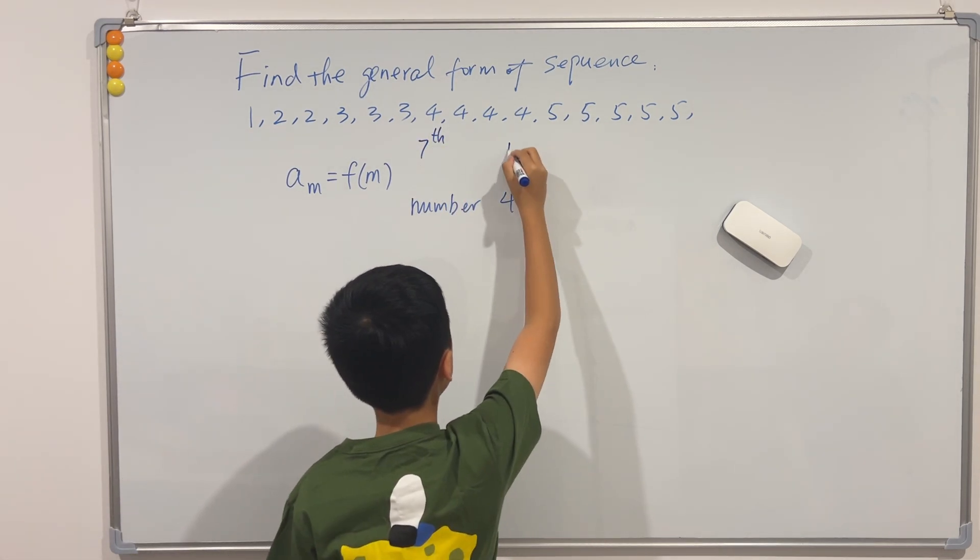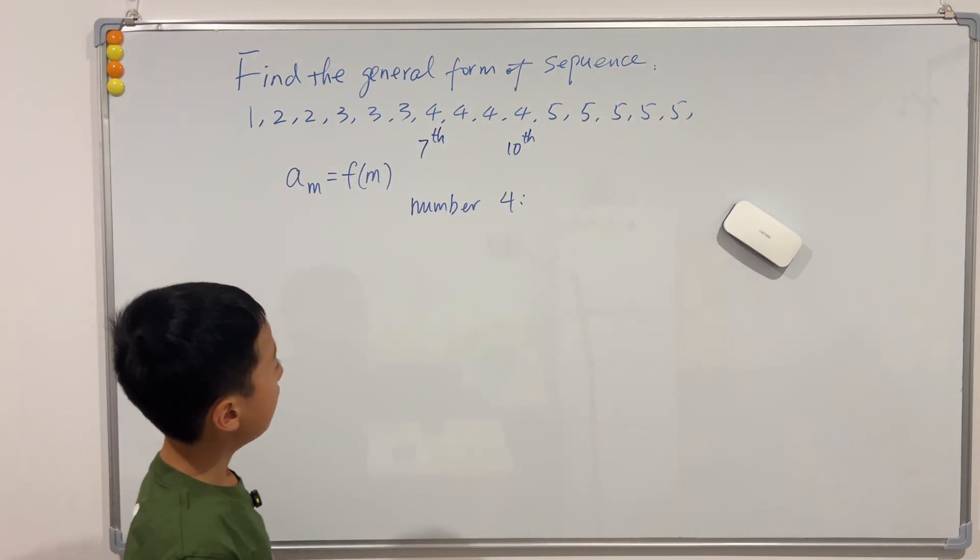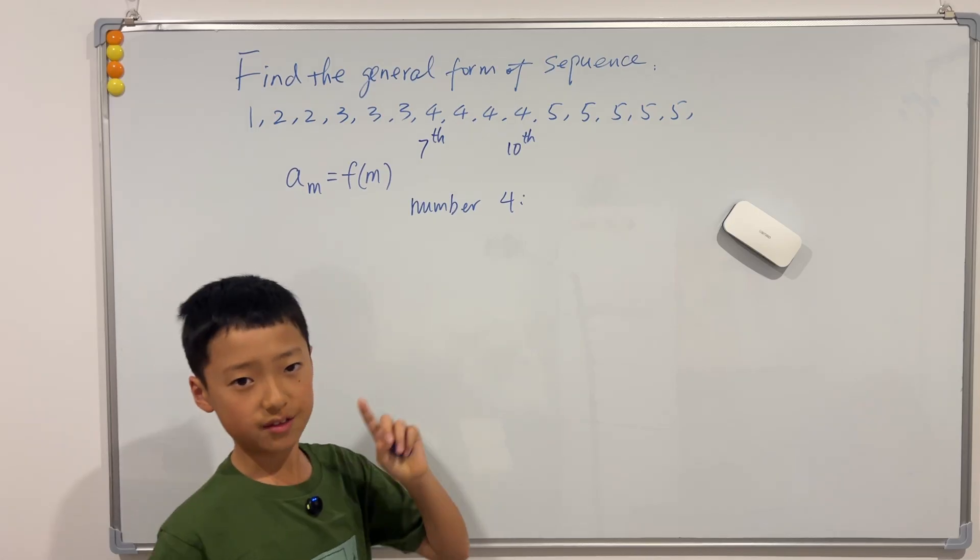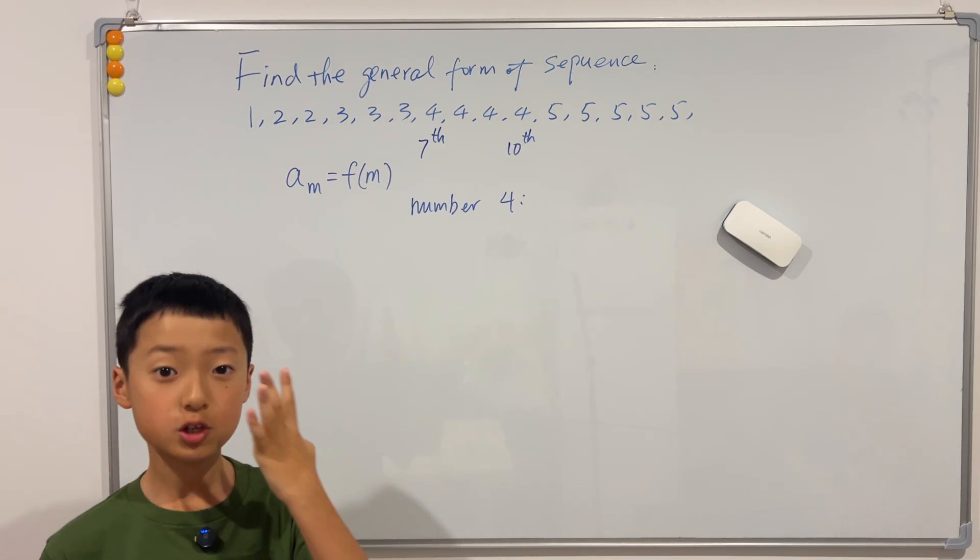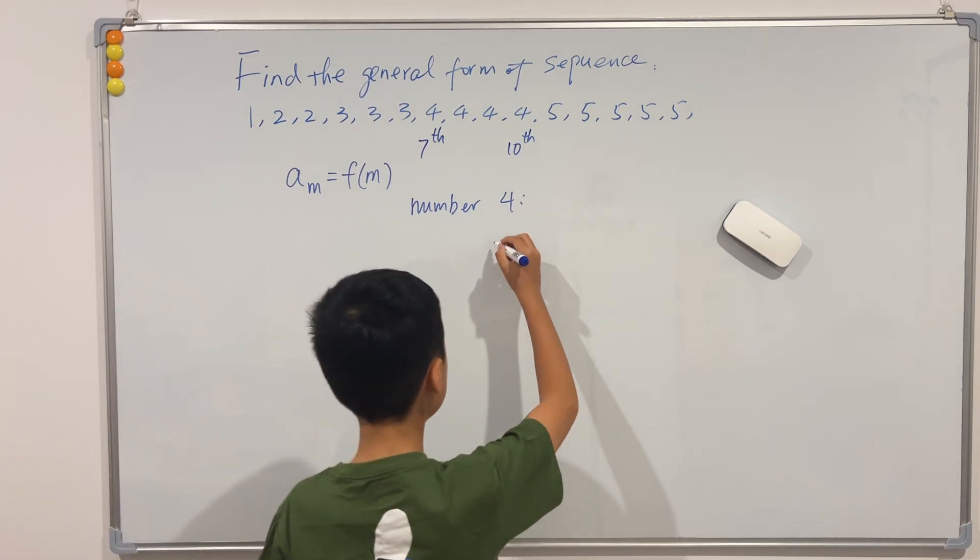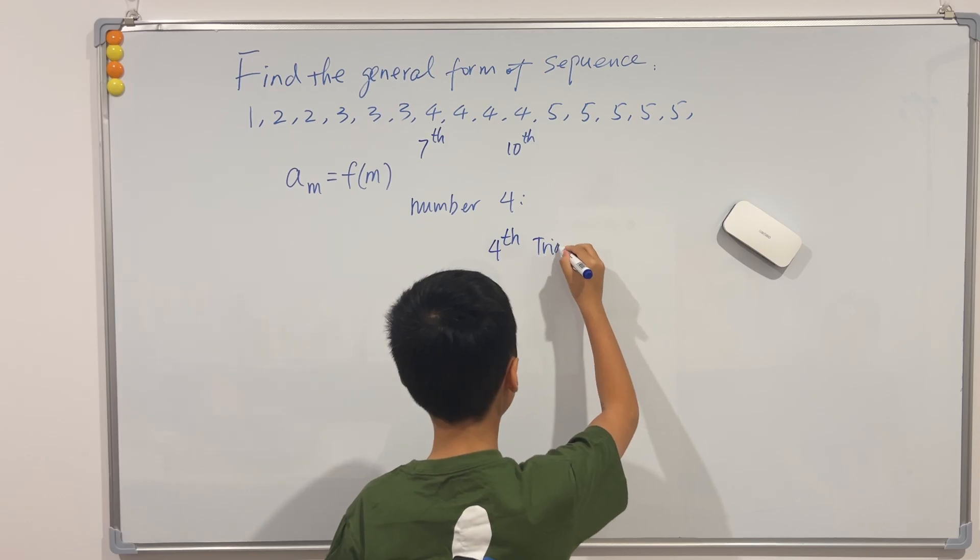And ends at the tenth term. Okay, now what is the tenth term? Well, 10 is actually the fourth triangular number, so we know it's the fourth triangle number.